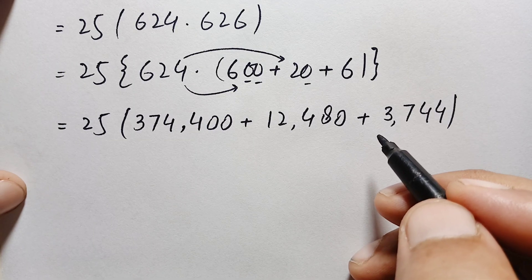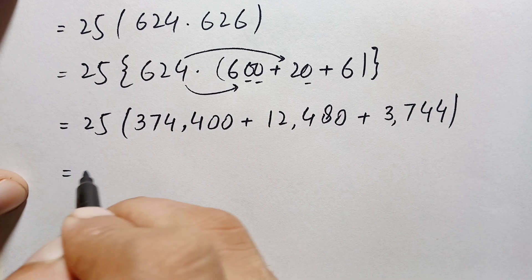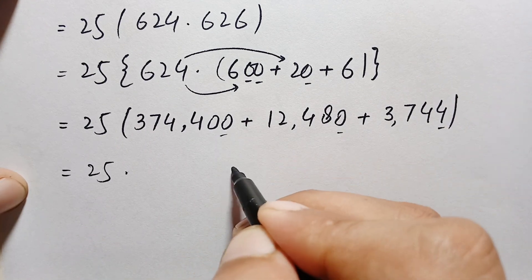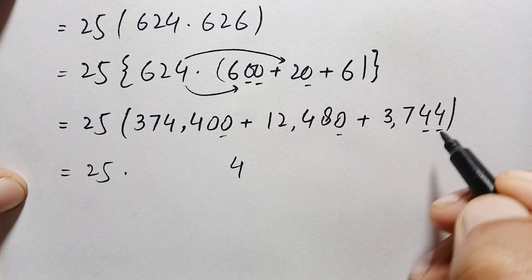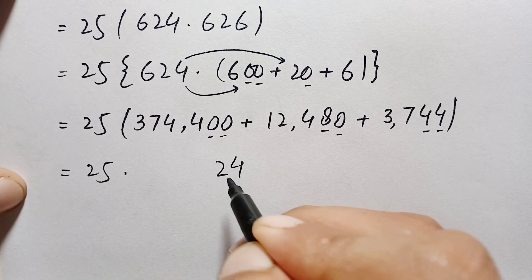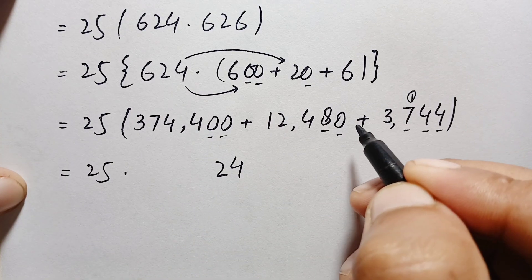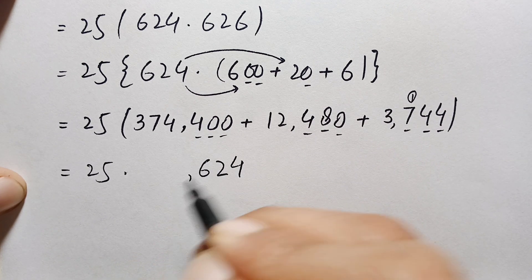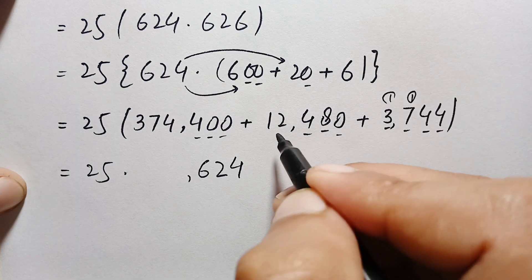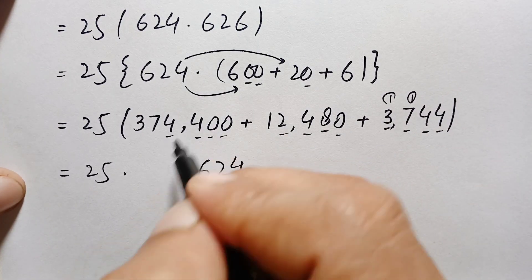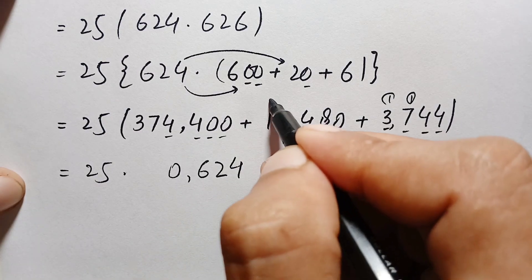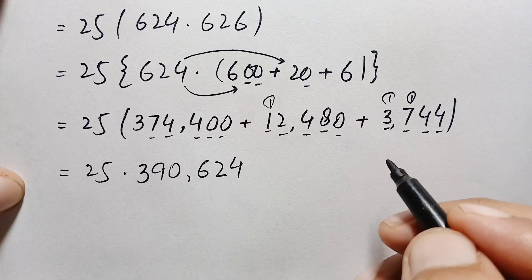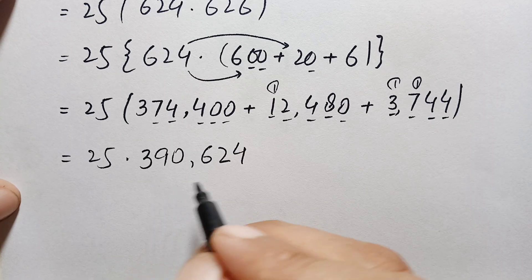Now we add the three partial products and then multiply the result by 25. Adding from the ones position: 4 plus 0 plus 0 is 4; 4 plus 8 plus 0 is 12 — write 2, carry 1; 7 plus 1 plus 4 plus 4 is 16 — write 6, carry 1; 3 plus 1 plus 2 plus 4 is 10 — write 0, carry 1; 1 plus 1 plus 7 is 9; and 3. So the sum of the three partial products is 390,624.